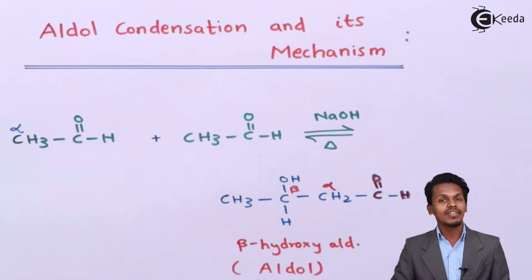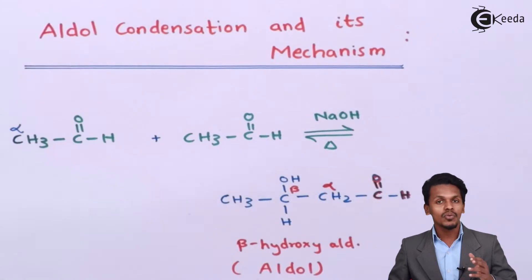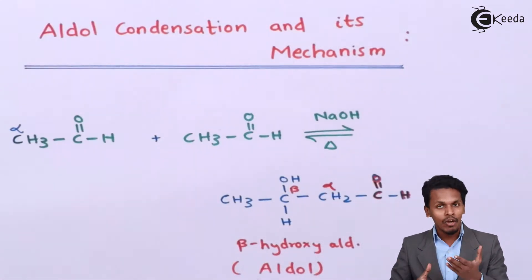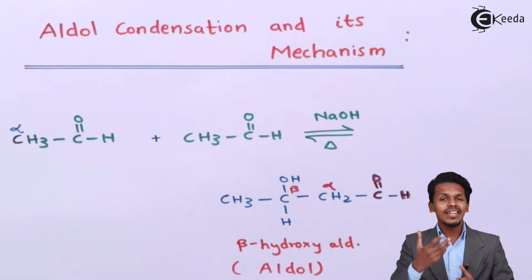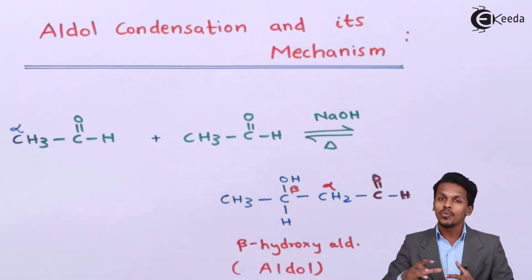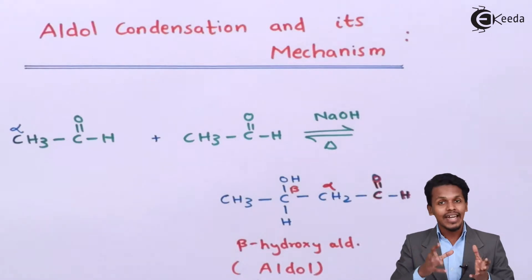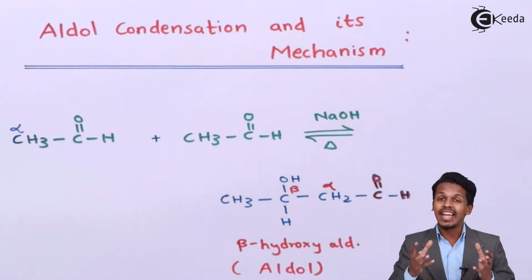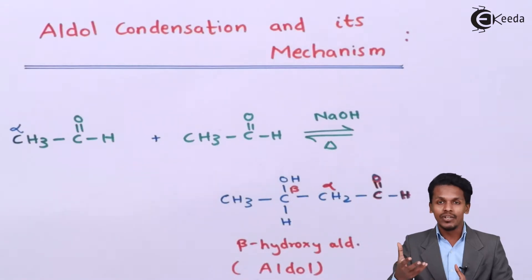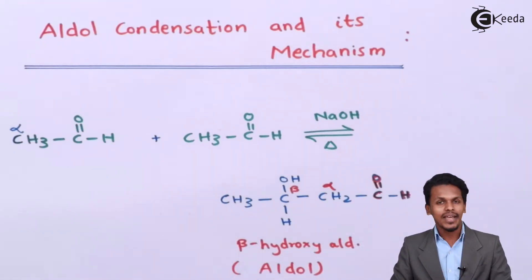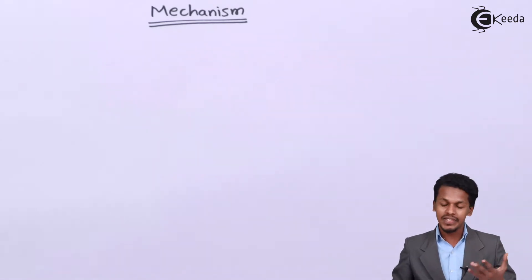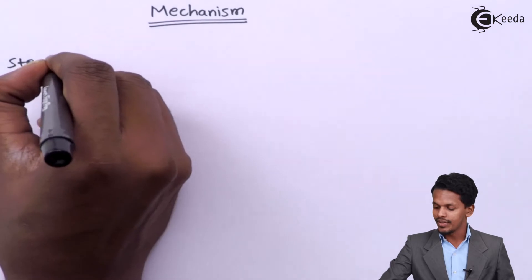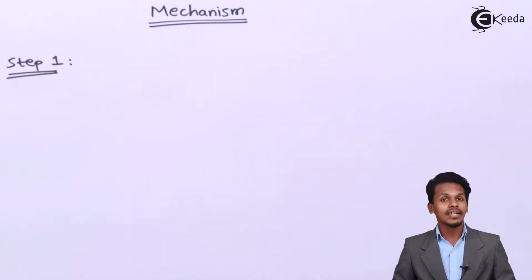This is the general reaction for aldol and ketol formation. Now let us go to the mechanism. Once we understand the mechanism, it will be easy to predict the product when two aldehydes or two ketones react to form an aldol or ketol respectively. The mechanism of aldol condensation is divided into three steps.